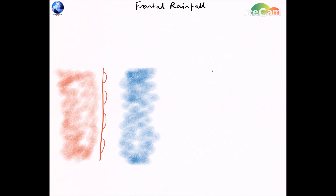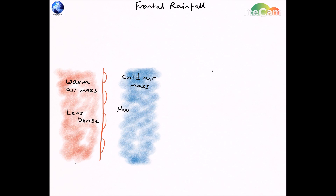So in frontal rainfall, what is going to make that air rise and that air cool? Well, as you can see over here, frontal rainfall is caused by different types of frontal air masses. If you've got the warm air mass and you've got a cold air mass, the warm air mass is indicated on the left and the cold air mass is indicated on the right.